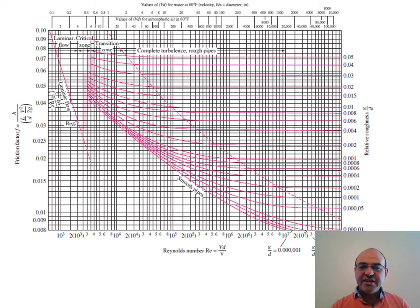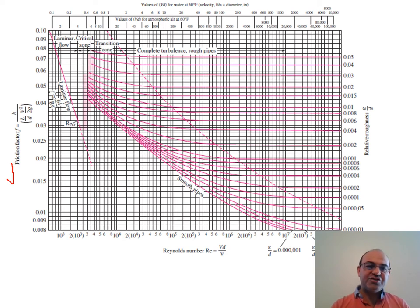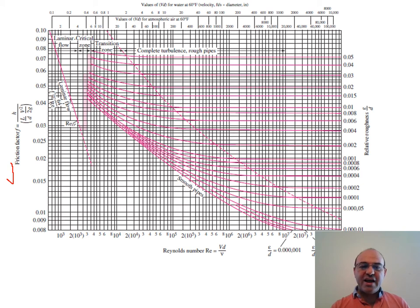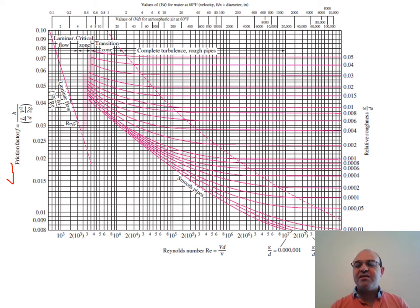On the Moody chart, the y-axis shows the Darcy friction factor F, equal to H(D/L)(2g/V²). Once F is known, you can find the head loss HF from the Darcy-Weisbach equation. For laminar flow, F = 64/Re, and this appears as a straight line on the log-log chart, extended to about Re = 2,300.